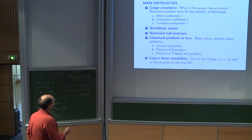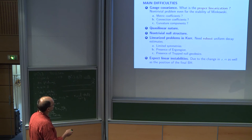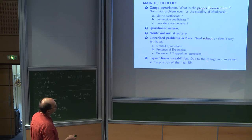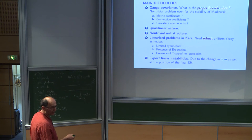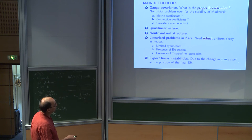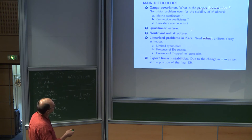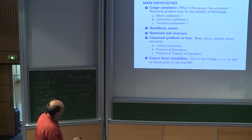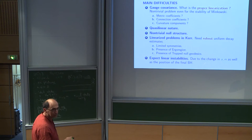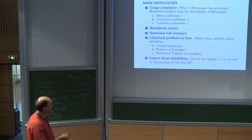Finally, no matter what linearization you do, you expect some kind of linear instability connected with gauges, due to the change in A and M. The final A and M will be different from the ones you started with, and that must be read as some kind of instability in the linearized equations. Also, the position of the final black hole will change, which also creates instabilities.